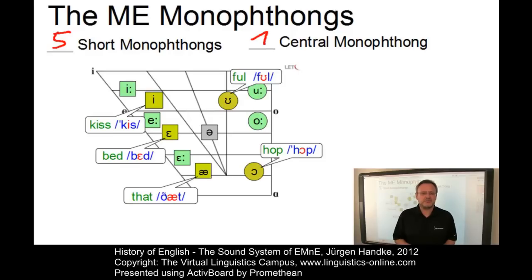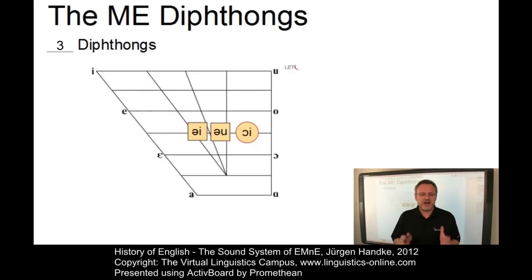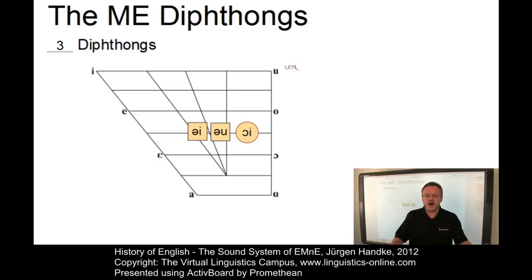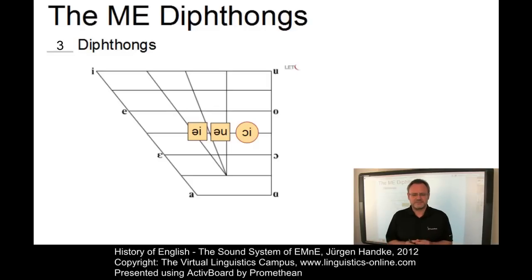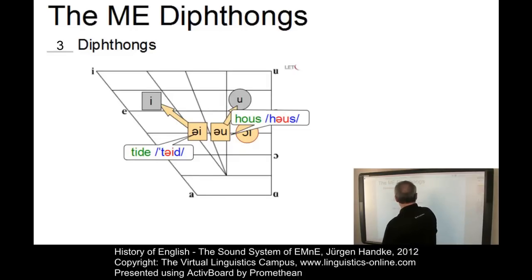Early Modern English only had three diphthongs. They were all upgliding, or closing — their final element was a high vowel. Centering diphthongs with schwa as the final element did not occur in Early Modern English. Words such as 'here', 'there', and 'sure' did not exhibit a centering diphthong since /r/ was always pronounced during this period, coming out as 'here', 'there', or 'sure'. The three diphthongs were: /eɪ/ as in 'taid', /ɔʊ/ as in 'house', and /ɔɪ/ as in 'joy'.